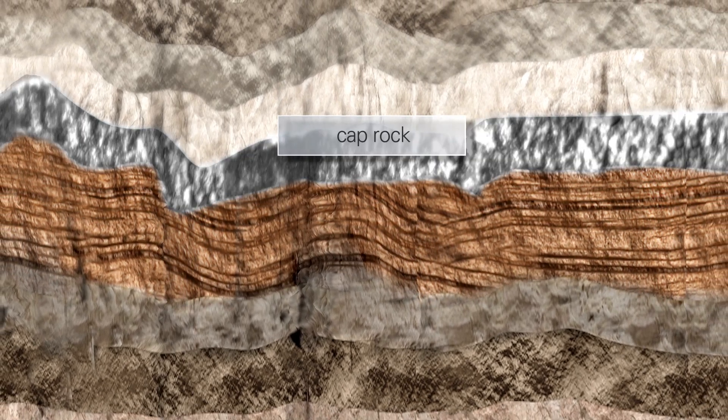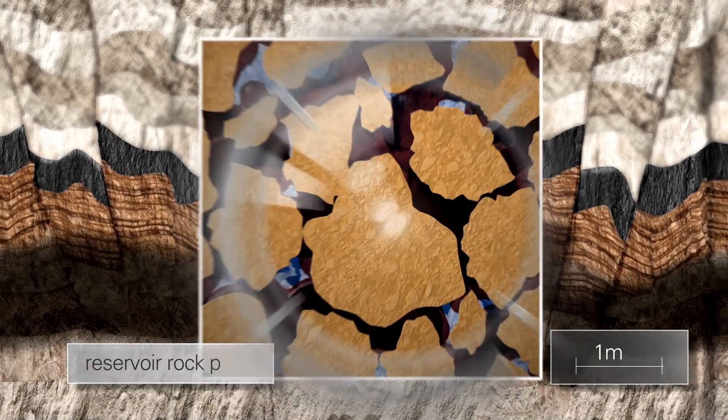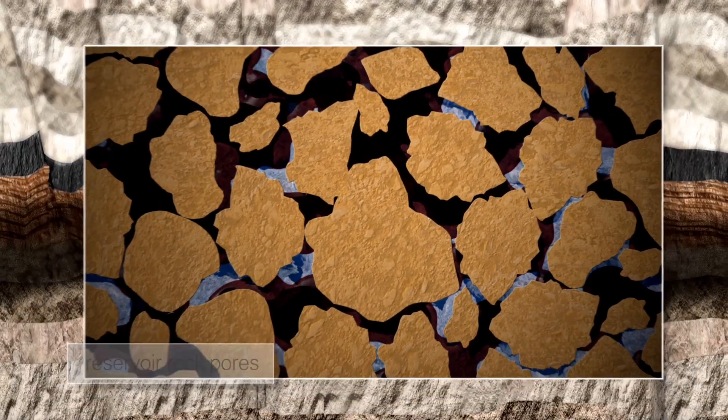In order for a reservoir to form, the porous rock needs to be capped by a layer of impermeable rock. Then, over millions of years, the rock tends to deform to create a trap. That way, conventional oil and gas, which are less dense than water, are able to naturally percolate upwards through the porous rock until they are blocked.